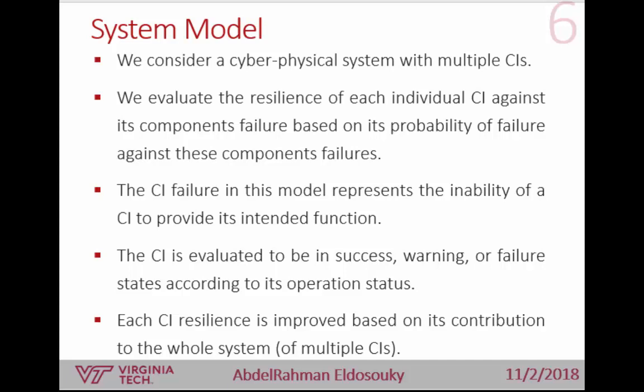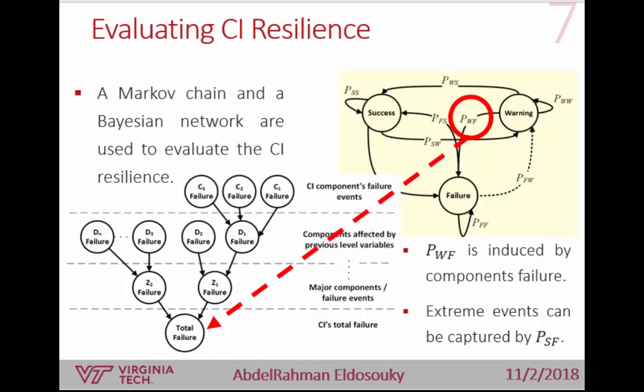We developed a state model where the infrastructure can be in either a success state, warning state, or failure state. Success state means everything is working perfectly. Failure is the complete failure of the system when it cannot provide its function anymore. Warning — the most important state in our model — is a state in which the system has some internal failures but is still able to provide its function.